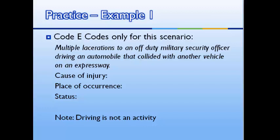When coding E-codes, we want to think of our categories: what's the cause, place, status, and activity? Note that driving is not an activity that has a unique activity code.